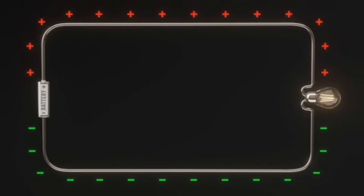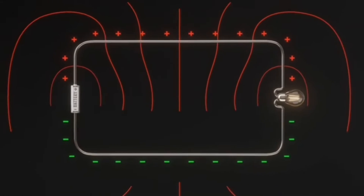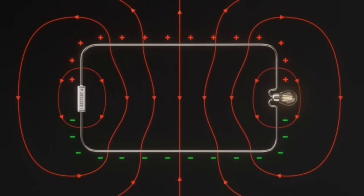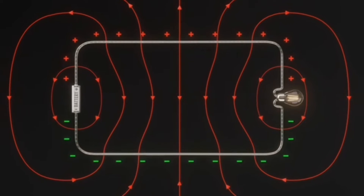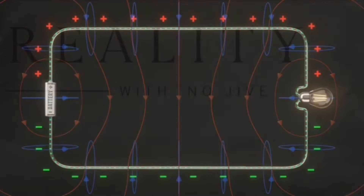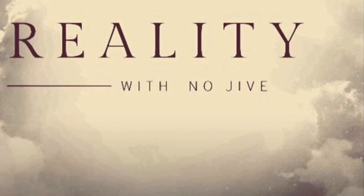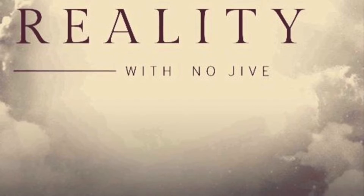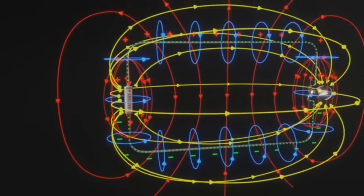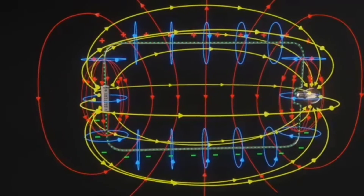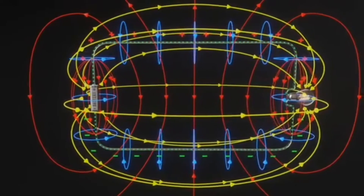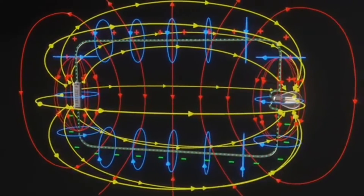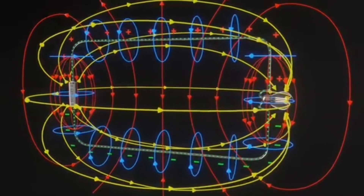The charge on the surfaces of the conductors also creates an electric field outside the wires, and the current inside the wires creates a magnetic field outside the wires. Using the Poynting vector, we find that the energy flux only goes one way — from the battery to the bulb.